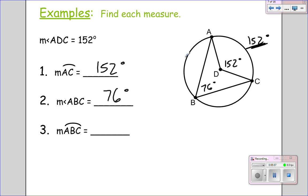And finally it wants arc A to B to C, which is the whole circle except for the 152. So you do 360 minus 152, and you get 208 degrees. So a lot of times we'll give you a central and inscribed and you'll have to work through both.